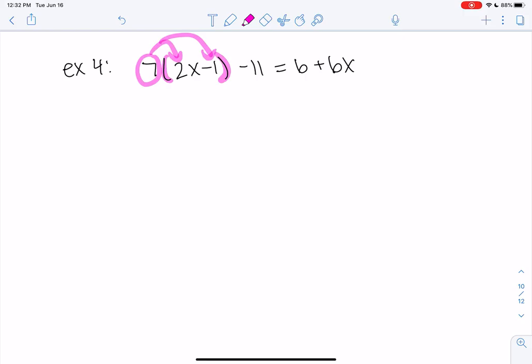So we're basically going to do 7 times 2x minus 7 times 1. Right? We distributed the 7 to the two things inside. And then everything else we'll just copy down for now. So that's the distributive law. So if we have parentheses, that's always the first step. If we don't have parentheses, we can skip this.